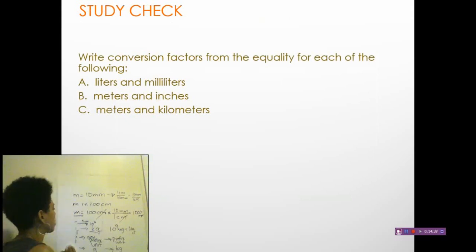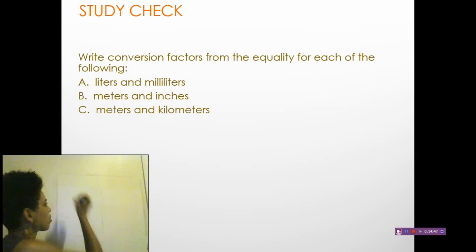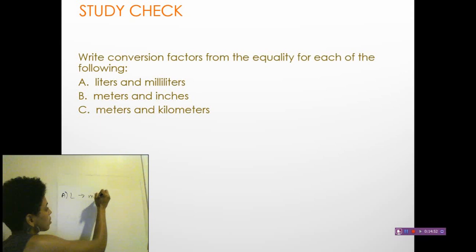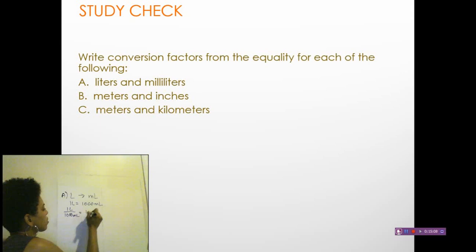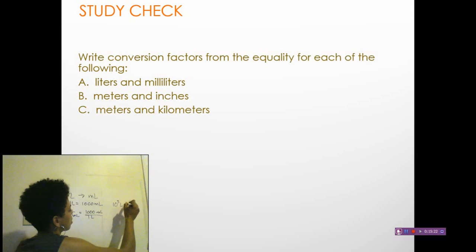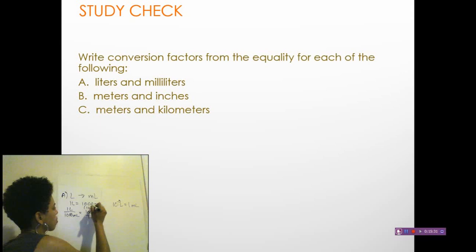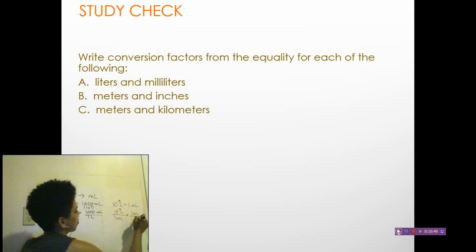Let's practice with conversion factors, going from liters to milliliters. The equality is one liter equals 1000 milliliters, or equivalently, 10⁻³ liters equals one milliliter. The conversion factors are: 1000 milliliters over one liter, or one liter over 1000 milliliters. You can also write them using powers of ten: 10⁻³ liters over one milliliter, or one milliliter over 10⁻³ liters. All of these are interchangeable.